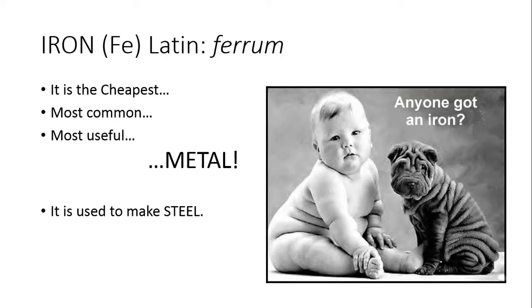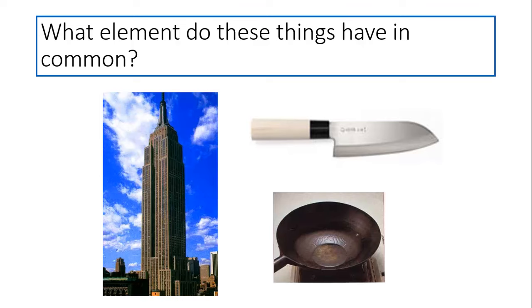Here's an example of an element. Iron, with the chemical symbol of Fe. Its Latin name is Ferrum, which was the Latin language spoken by the Romans. It is the cheapest metal, the most common metal, the most useful metal, and it is used to make steel. Does anybody have an iron to get out the wrinkles?